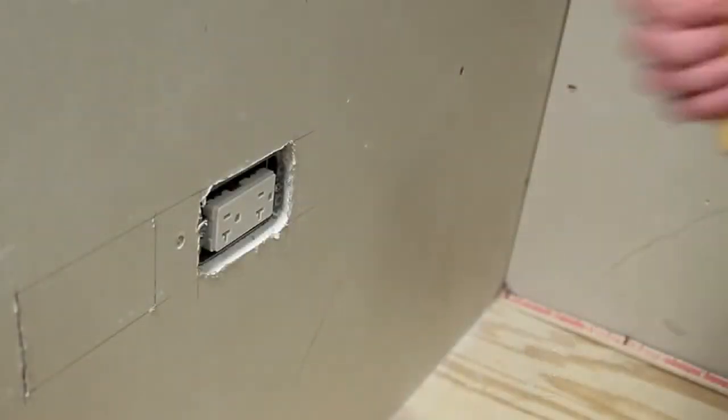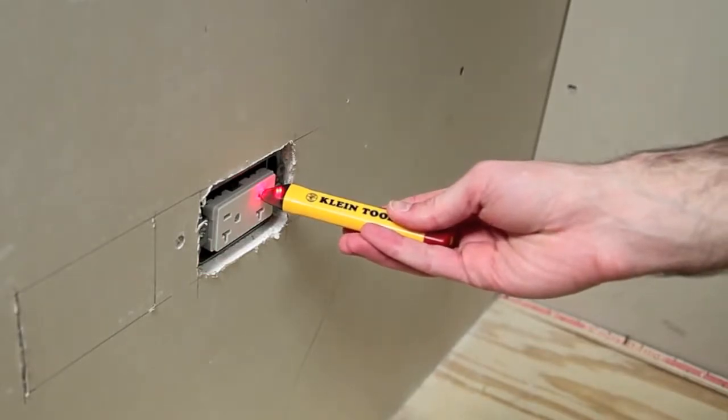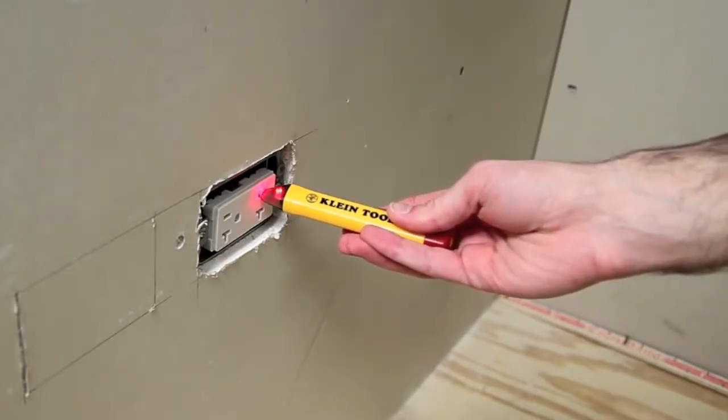The NCVT2 detects live mains AC voltage up to 1000 volts with a strong steady red LED and loud high-pitched beeping tone. It also automatically switches between detection ranges.